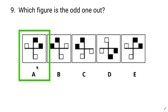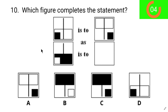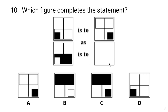Alright, last one — which figure completes the statement? Here are your 20 seconds. Okay, when this image is converted, this rectangle has moved to the top and this black square has moved to a new position. Similarly, in the second pair, the black rectangle should move to the top and the white square should move to the corresponding position. So the answer is B.